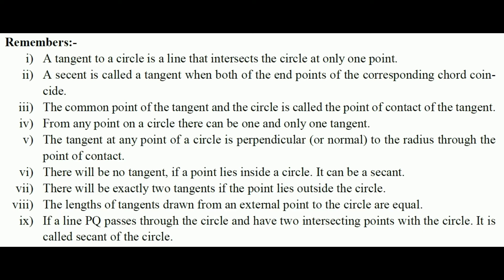Point 2: A secant is called a tangent when both endpoints of the corresponding chord coincide. That is, when the endpoints of the secant line meet each other, the secant line becomes a tangent line.